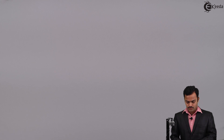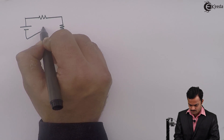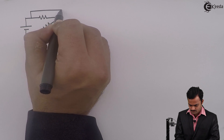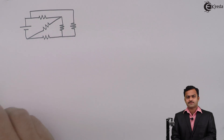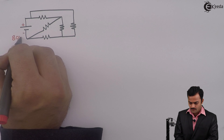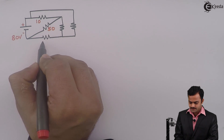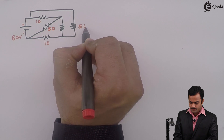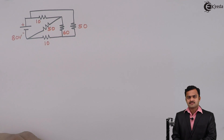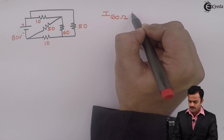Hello friends, let's apply Thevenin's theorem to a problem. We'll take a simple problem having one source. In this problem I have considered one source of 80 volts and the remaining elements are resistances: 10, 50, 10, 50, and 60 ohm. The objective is to find the current flowing through the 60 ohm resistor using Thevenin's theorem.